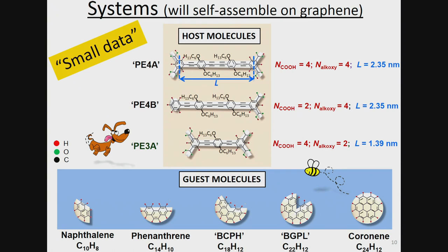This is my data set, and that's why I call it small data — it's really a very small data set. I have three host molecules which I've chosen to represent as bone shapes: they are phenylene ethylenes, they have backbones with COOH groups at the termini and alkoxy side chains. The three differ in important ways: two have the same length backbone, one has a shorter backbone; two have COOH groups at both ends, one at only one end; two have four alkoxy side chains, one has only two. The guest molecules are naphthalene, phenanthrene, etc., and importantly they can be viewed as angular fragments of coronene — a geometrical view that I find useful.